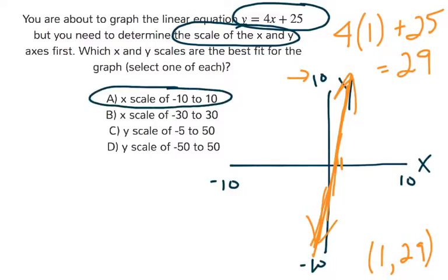And then on the y, we have two choices. They both end in 50. We know we need something very tall because the first point is 29. But now it's asking, do you want to go from negative 5 to 50 or negative 50 to 50?